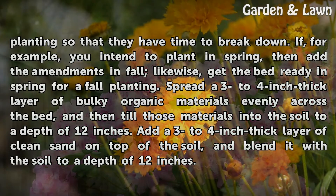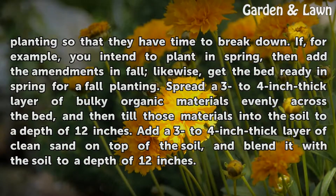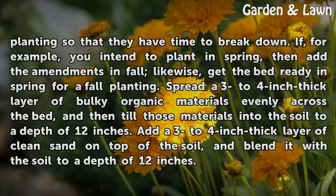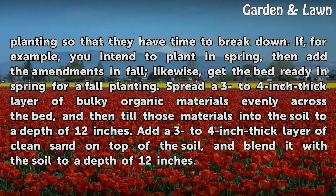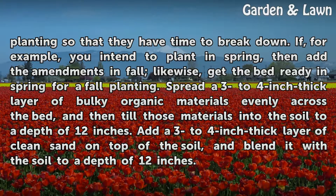Add the materials to the soil one full season before planting so they have time to break down. For example, if you intend to plant in spring, add amendments in fall; likewise, get the bed ready in spring for a fall planting. Spread a 3 to 4 inch thick layer of bulky organic materials evenly across the bed and till them into the soil to a depth of 12 inches. Then add a 3 to 4 inch thick layer of clean sand on top and blend it into the soil to a depth of 12 inches.